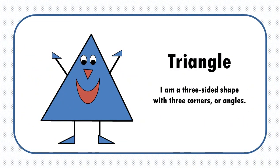Hi, I am a triangle. I am a three-sided shape with three corners, or angles. Let's go ahead and count my sides. One, two, three. I have three sides.